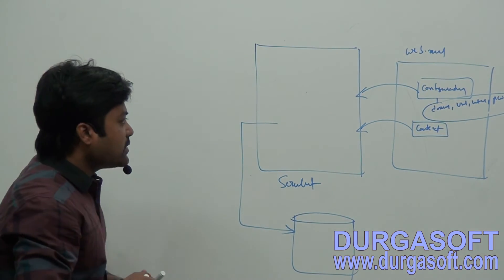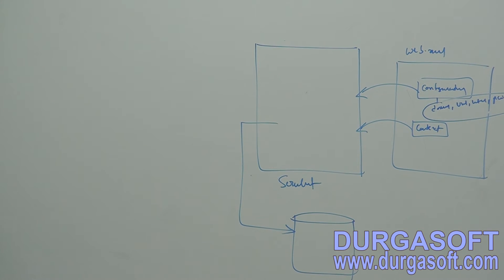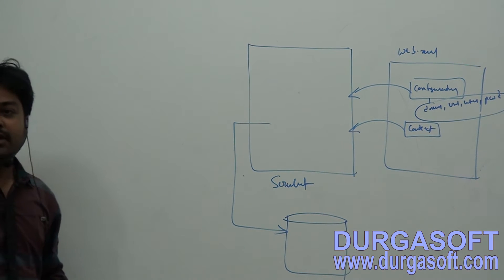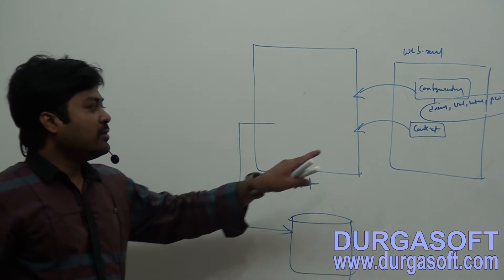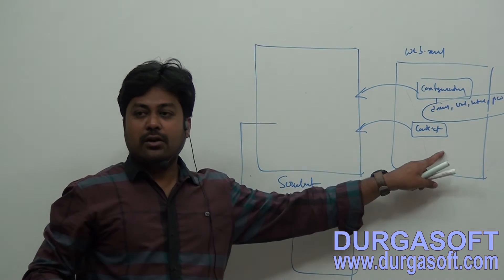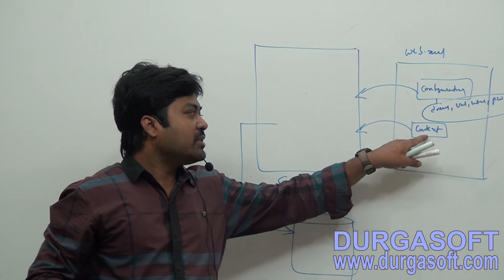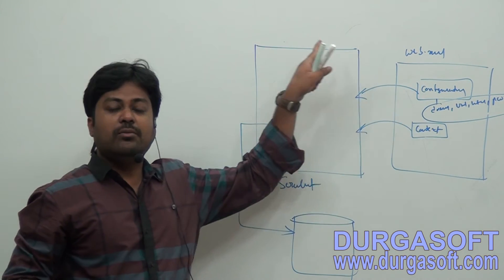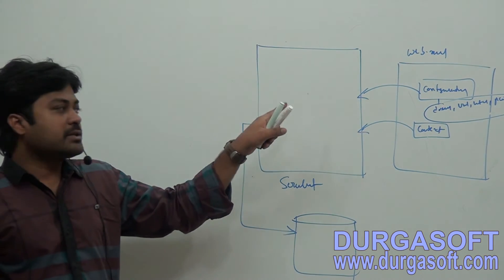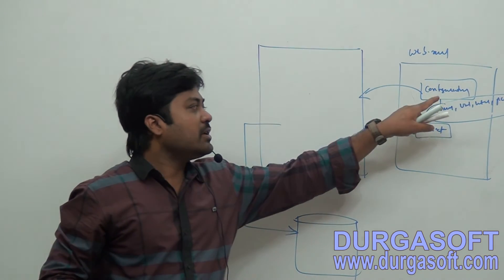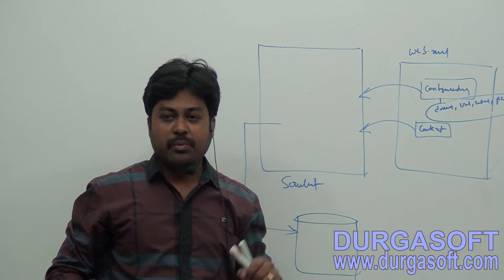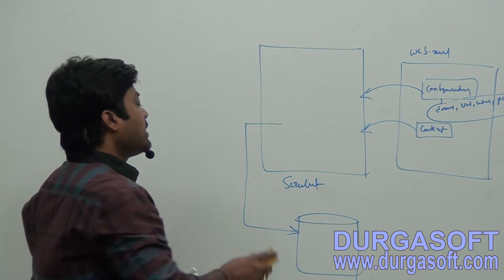What is the difference between a configuration parameter and a context parameter? For the entire application, it will create one servlet context object. If you keep anything under context, the data will be available to all servlets. If you keep anything under configuration, it will be available to only one particular servlet.